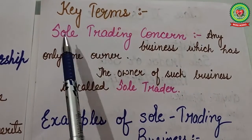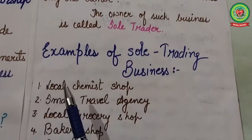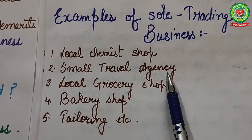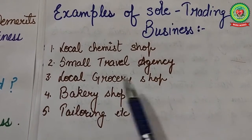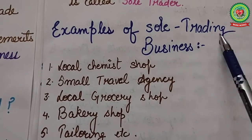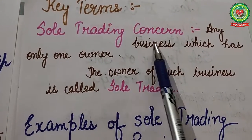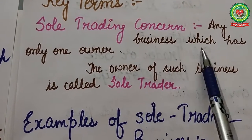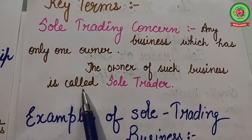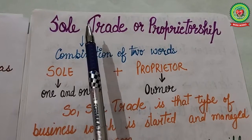Today we will discuss the meaning and definition of sole trade, characteristics, and evaluation — its merits and demerits. First, we will discuss key terms. A sole trading concern includes examples like a local chemist shop, small travel agency, local grocery shop, bakery shop, or tailoring. These are some examples of sole trading businesses.